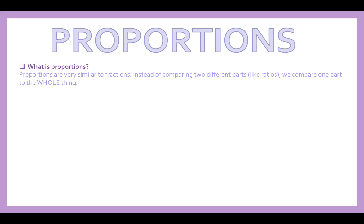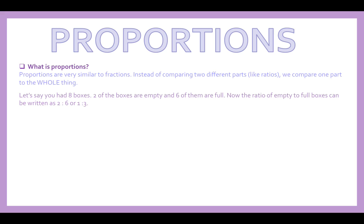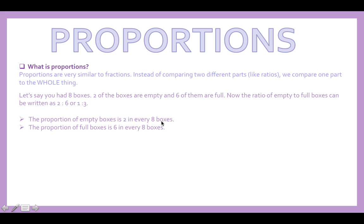Now, proportions. Proportions are very similar to fractions, but instead of comparing two different parts like ratios do, we compare one part to the overall whole. Say you had eight boxes — two are empty and six are full. The ratio of empty to full is 2 to 6, simplified to 1 to 3. But the proportion of empty boxes is 2 in every eight boxes — you're working out which part of the overall total.